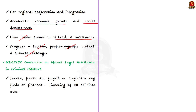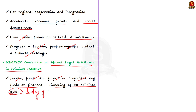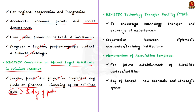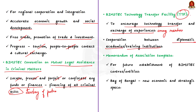The third area of interest is the BIMSTEC Convention on Mutual Legal Assistance in Criminal Matters. This convention includes the provision for taking measures to locate, freeze and forfeit or confiscate any funds or finances meant for the financing of all criminal acts in the territory of either party — that is, the countries that are members of BIMSTEC. The fourth area of interest is the BIMSTEC Technology Transfer Facility, that is the TTF, mainly to encourage technology transfer and exchange of experiences among the members of BIMSTEC.